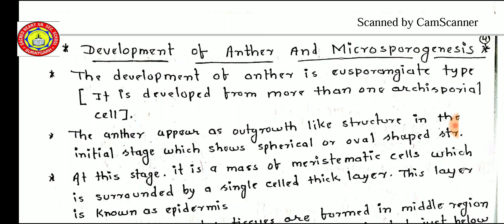Now we discuss the development of the anther and microsporogenesis. Microsporogenesis means the development of microsporangia in the pollen sac. The development of the anther is eusporangiate type — there are two kinds: eusporangiate and leptosporangiate. In eusporangiate type, the anther is developed from more than one archesporial cell.